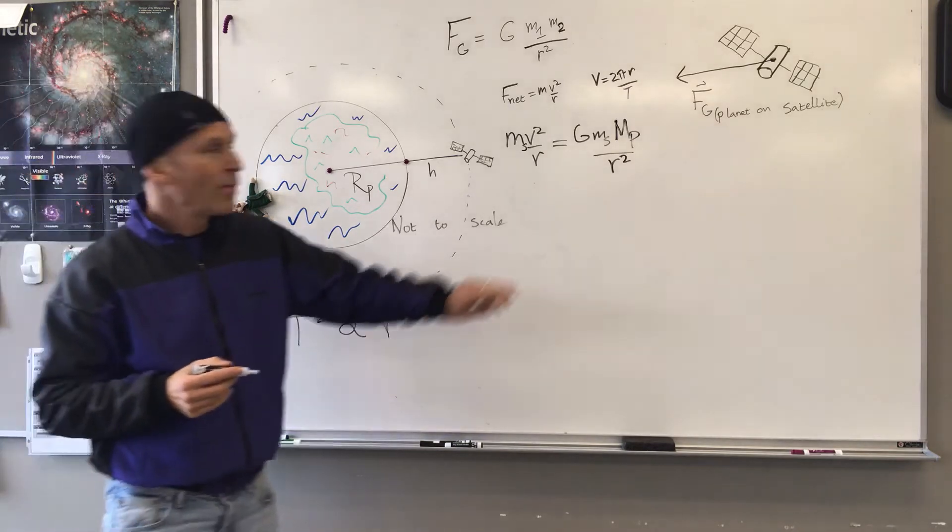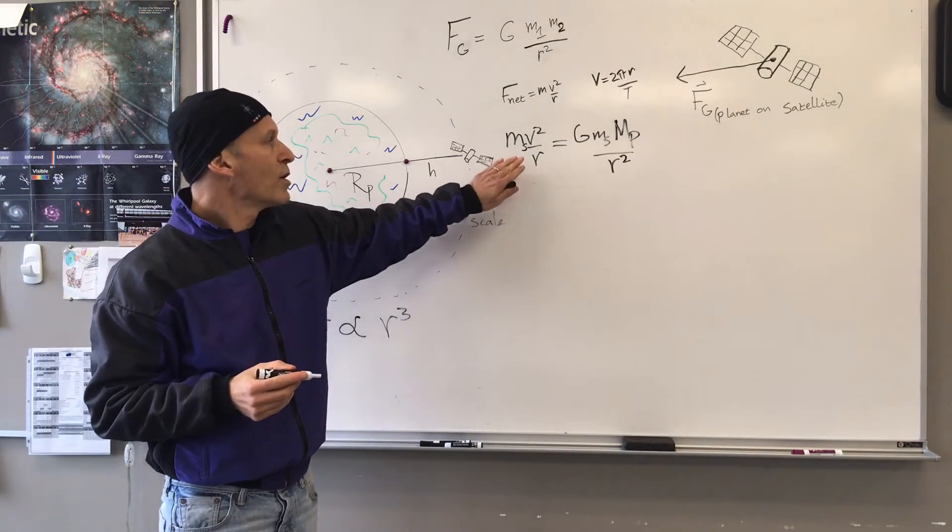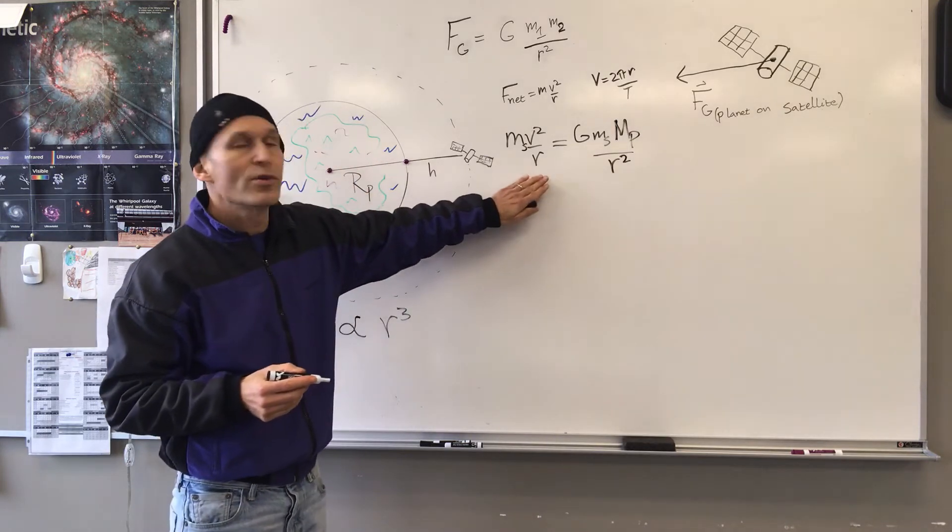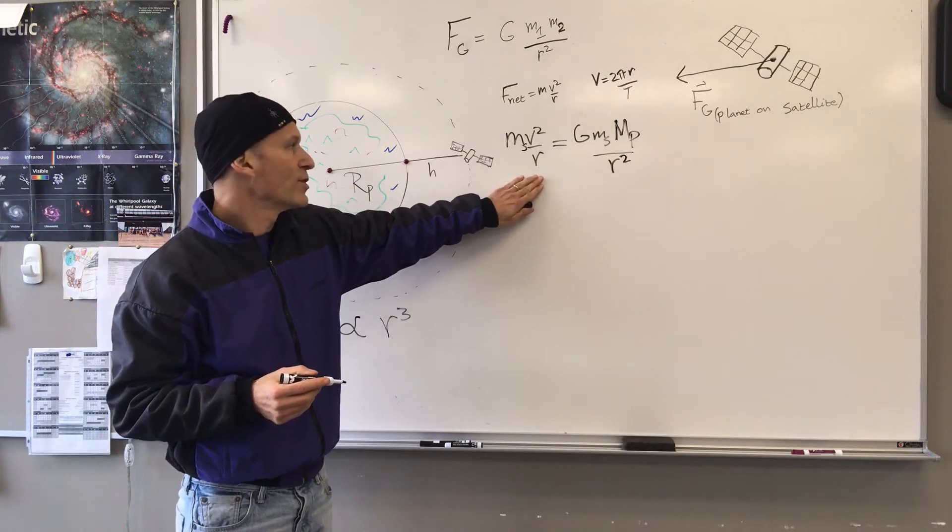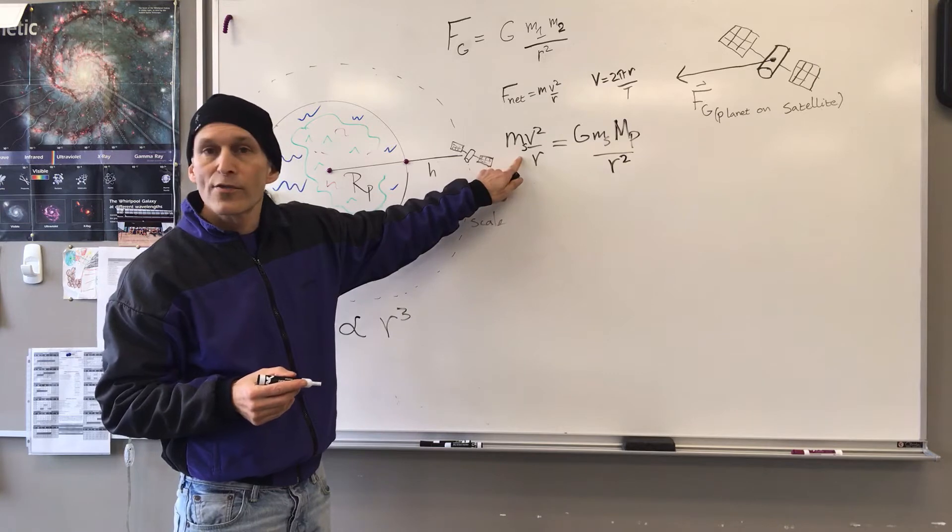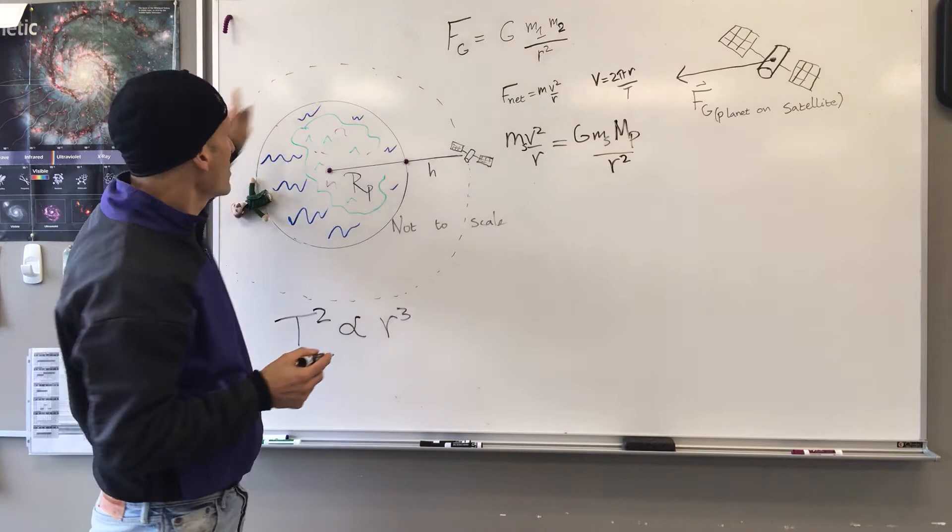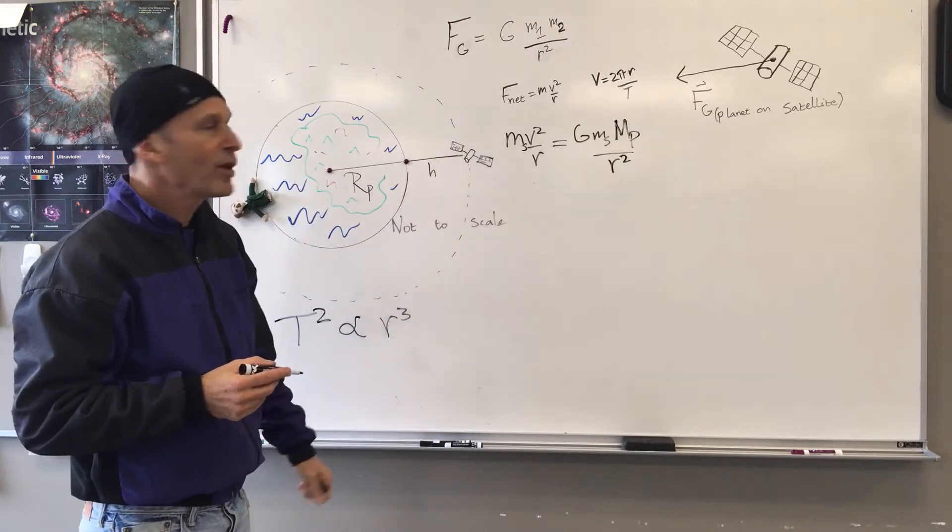We start out by setting Newton's universal gravitation on the right side equal to the net force equation for objects moving in a circle. MS stands for the mass of the satellite. Capital MP stands for the mass of the planet. So this satellite is in circular motion around the planet.